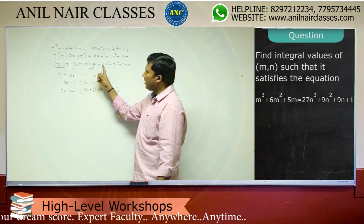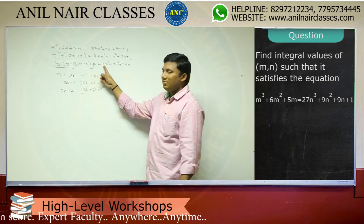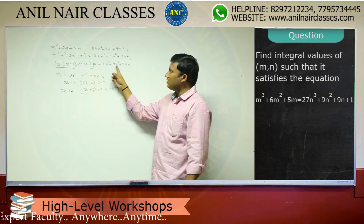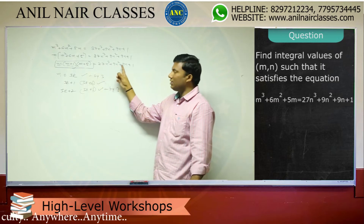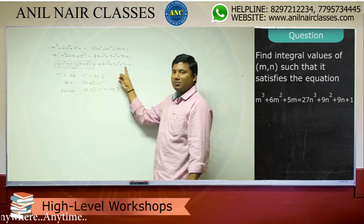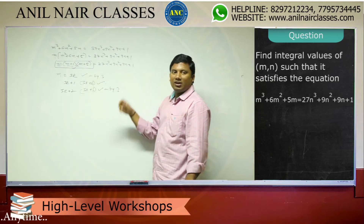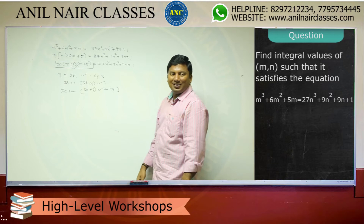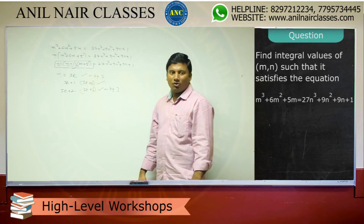So the left-hand side — m into m plus 1 into m plus 5 — is divisible by 3. But look at the right-hand side: 27m cube plus 9m square plus 9m plus 1. The first three terms are divisible by 3, but the last term is 1, which is not divisible by 3. So there is no integral value of m satisfying the equation.